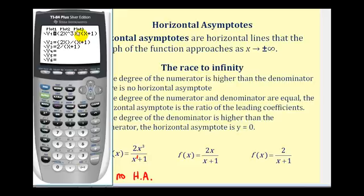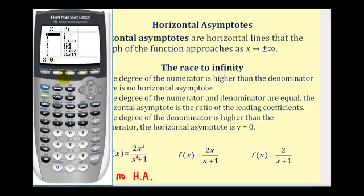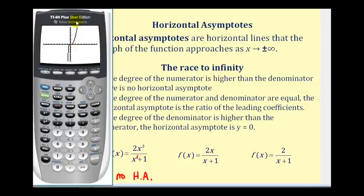With the function typed into y one, using the table feature we can see that as x increases, y increases without bound — illustrating why there's no horizontal asymptote. Looking at the graph, as we move right the graph moves up indefinitely, and moving left it moves down indefinitely. Therefore there's no horizontal asymptote.